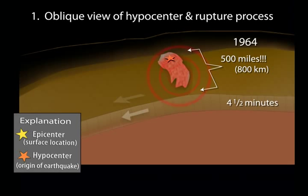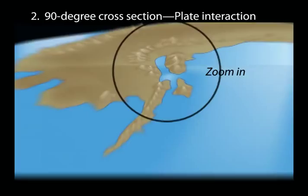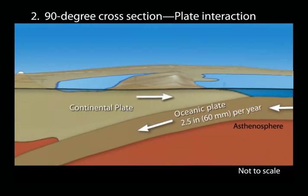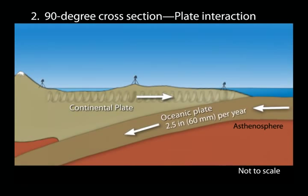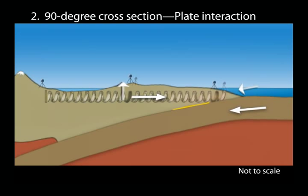Let's zoom in now to a cross section to view the plate interaction. The dense oceanic plate dives beneath the more buoyant continental plate at a rate of about 2.5 inches per year. Because tectonic plates are elastic like a spring, converging plates build energy at the leading edge of the continent. Locked by friction, the upper plate is forced back and shortened, raising the land surface. GPS, not available in 1964, is now available to measure that strain.